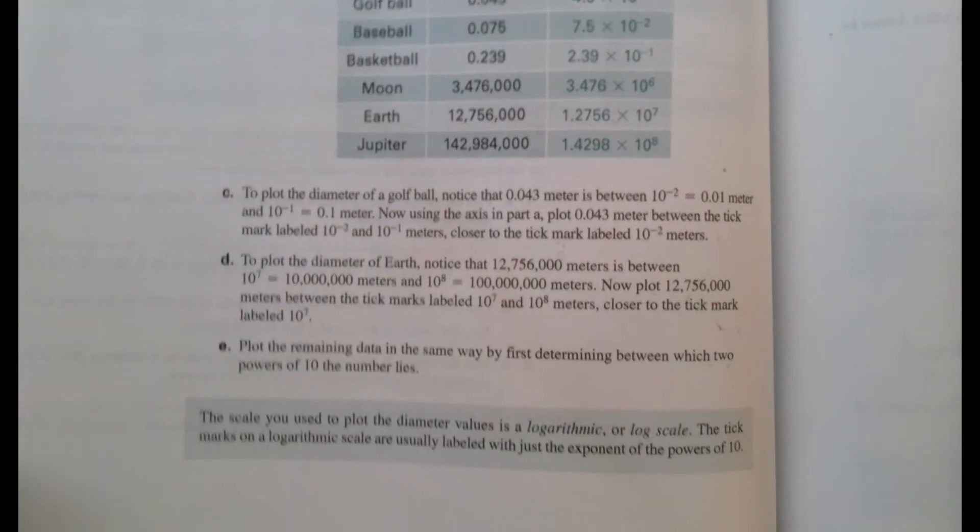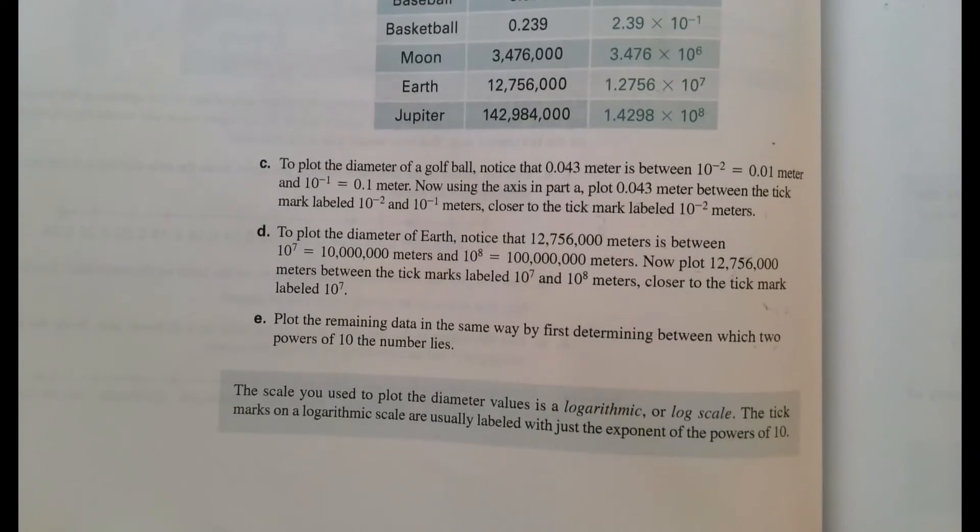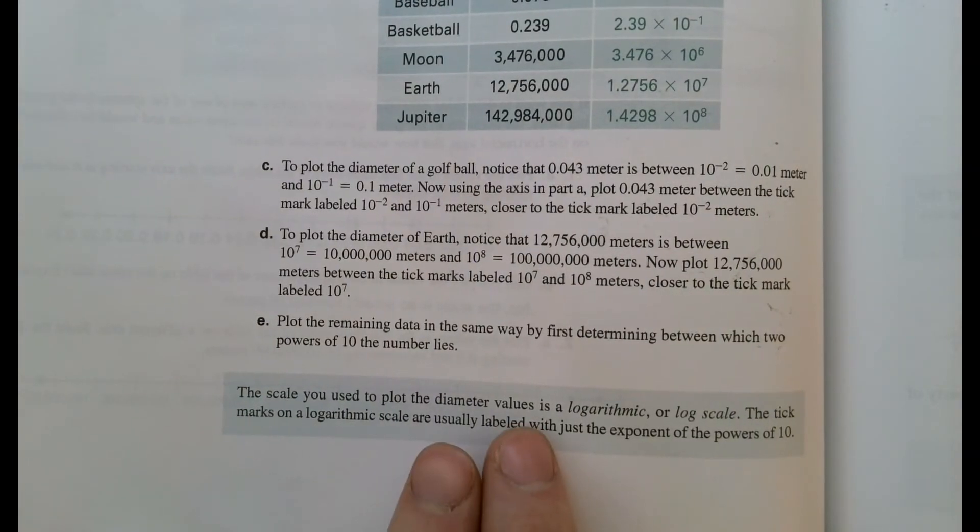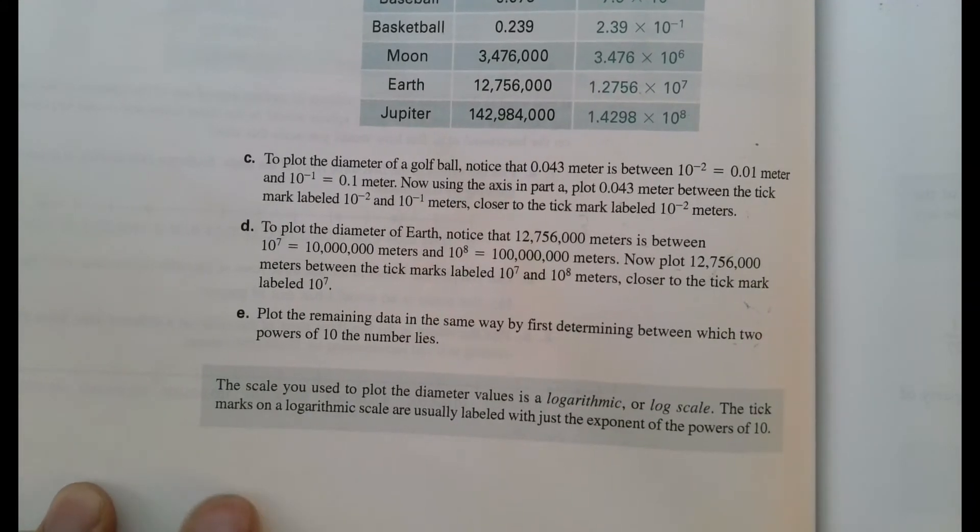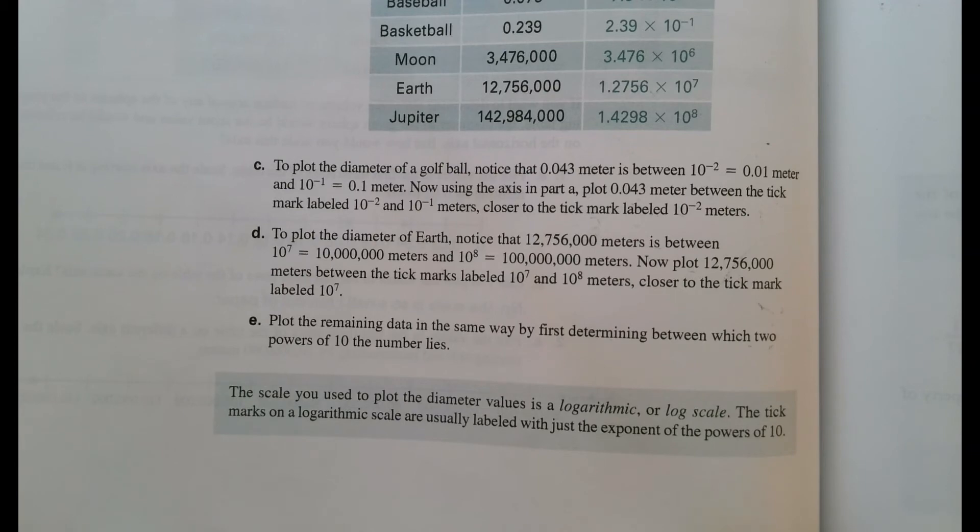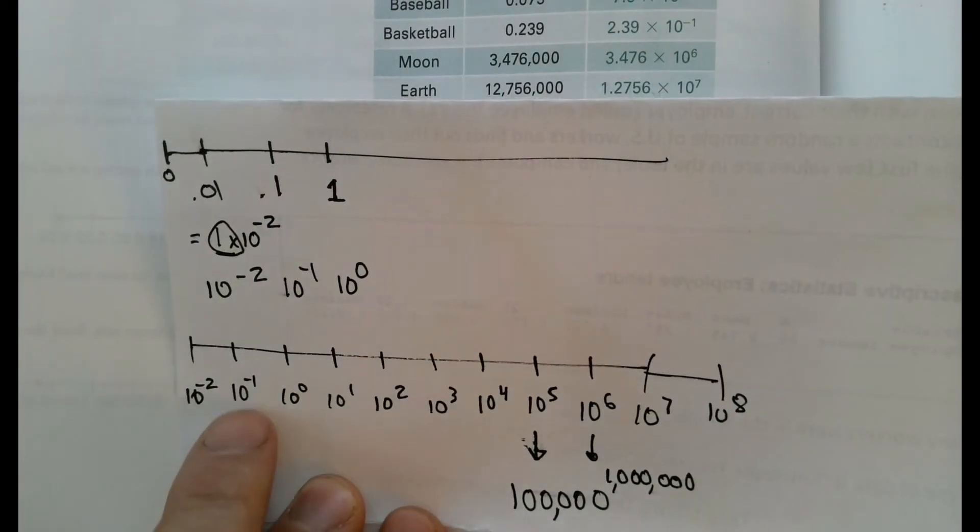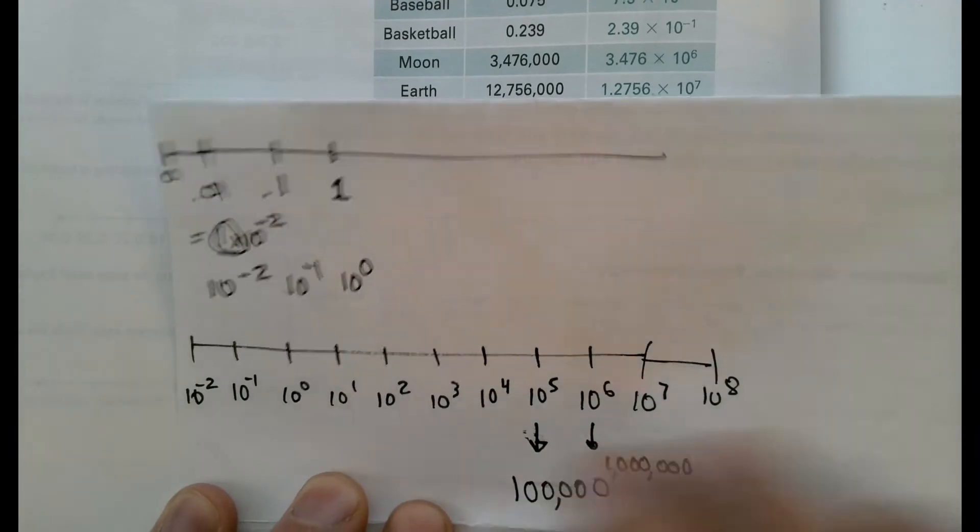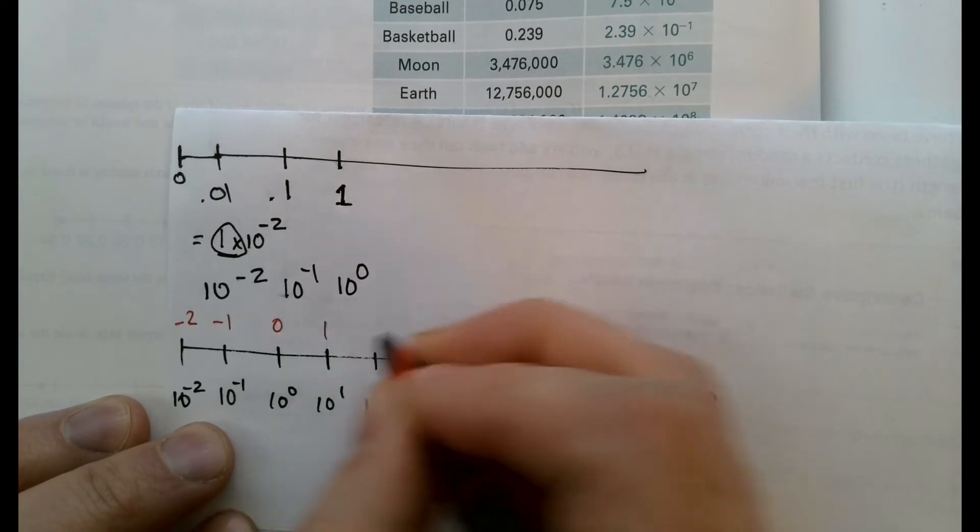So as I mentioned before, what we have discovered here, or what we created in a previous video, is what's called a logarithmic or log scale. Those tick marks on the x-axis are usually labeled with just the exponents of the power of 10. So instead of having 10 to the negative 2 and 10 to the negative 1, we relabel all these as negative 2, negative 1, 0.